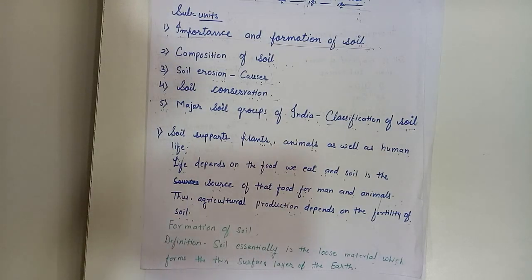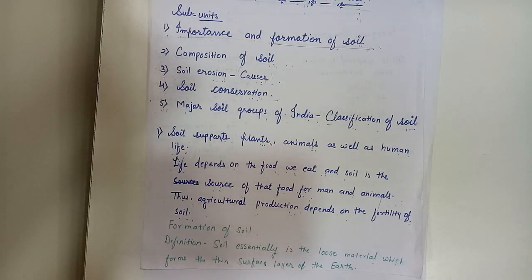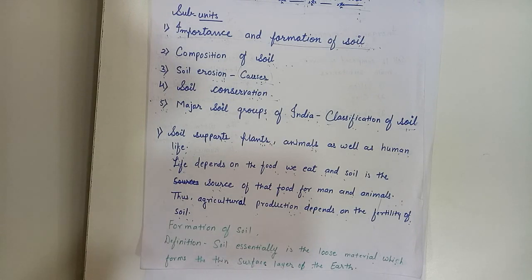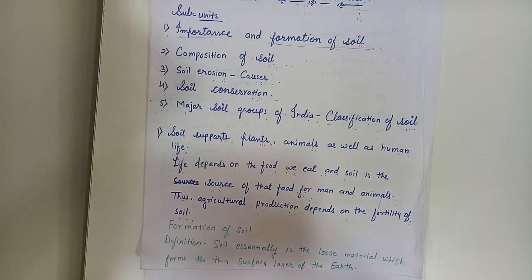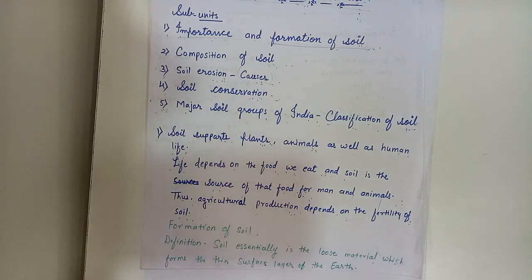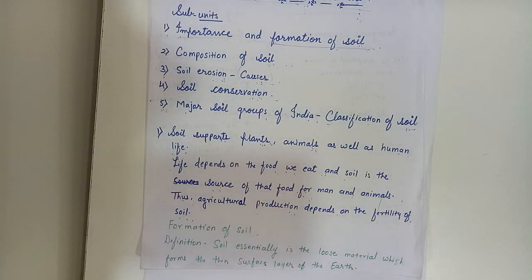Our life is possible on this unique planet only because of soil and only because of plants. Soil plays a very important role. Farmers are growing different types of crops, and we human beings and animals are all using these crops for surviving our life. One most important thing is oxygen, and this oxygen is possible only because of plants.